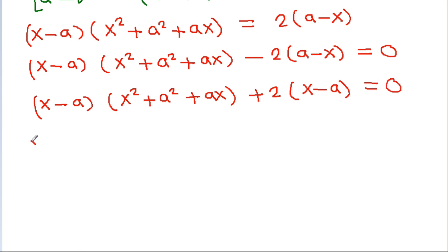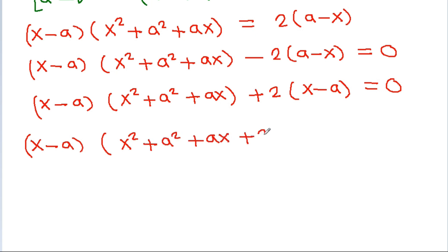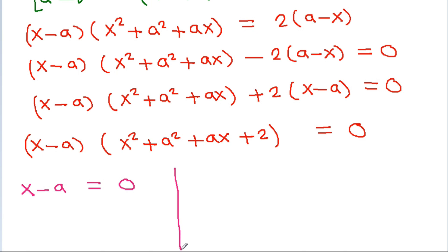Since (a minus x) equals minus (x minus a), we can take (x minus a) as a common factor, giving us (x minus a) times (x squared plus a squared plus ax plus 2) is equal to 0. So either x minus a equals 0, or x squared plus a squared plus ax plus 2 equals 0.